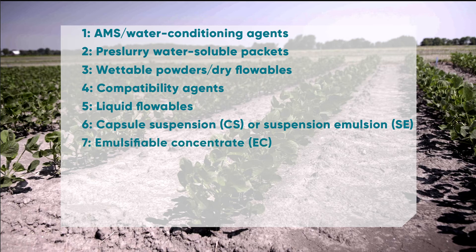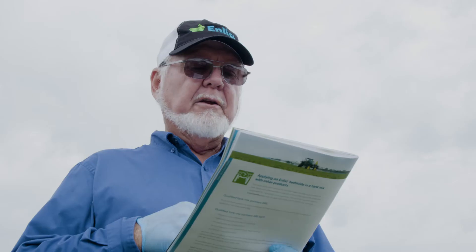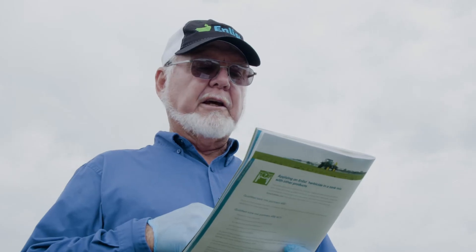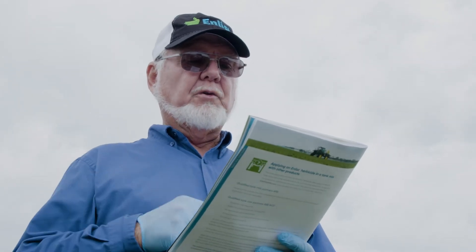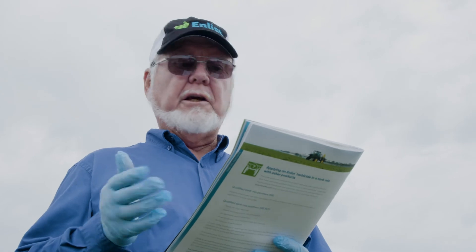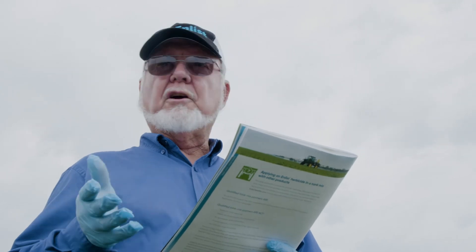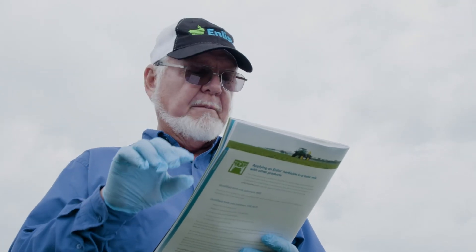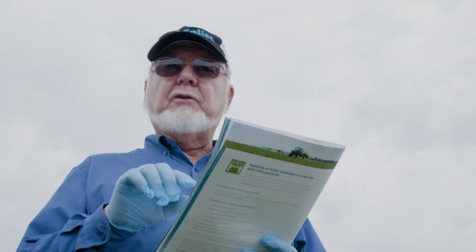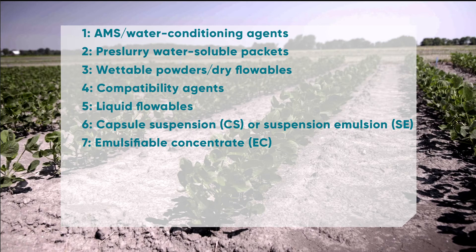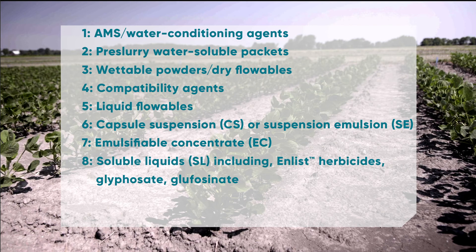Number seven would be your emulsifiable concentrates. That's where the soluble liquids — the Enlist Duo, the Enlist One, the glyphosate products — come into play. They're way down the list; in fact, they're the final active ingredient that you would introduce into the mixture when doing a complex tank mix sequence.